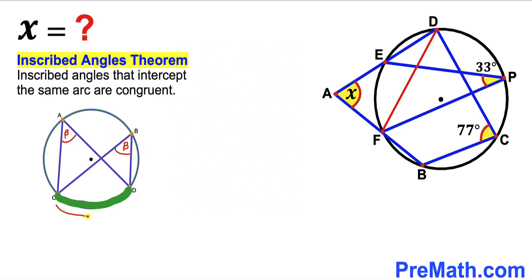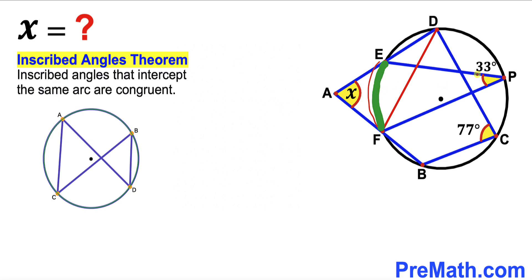Now let's focus on arc EF, which is intercepted by angle EPF — which is 33 degrees. This same arc EF is also intercepted by angle EDF. Since these two angles intercept the same arc, they are congruent, so angle EDF is 33 degrees as well.